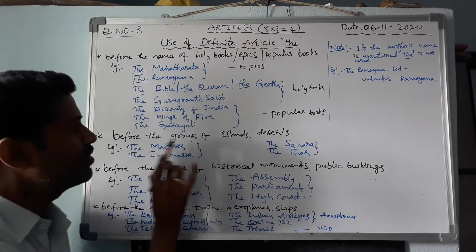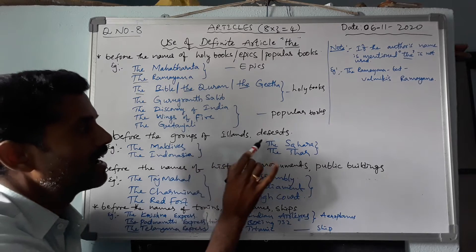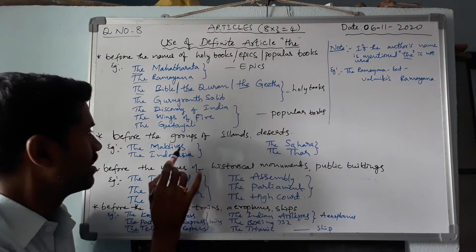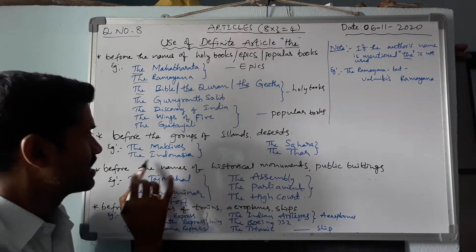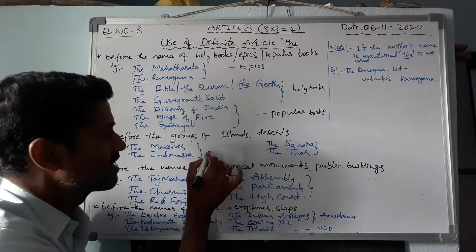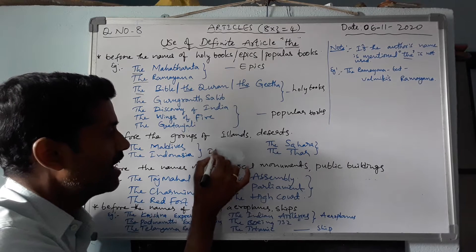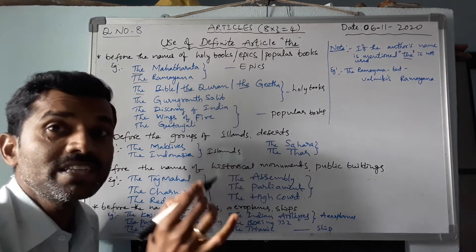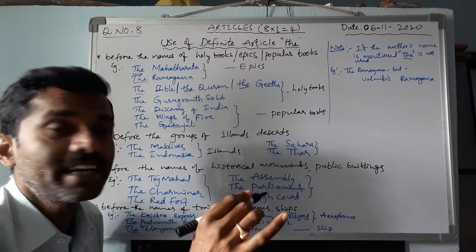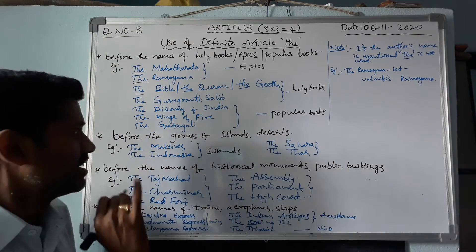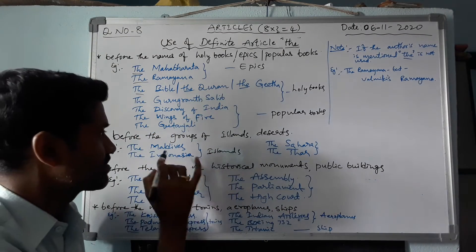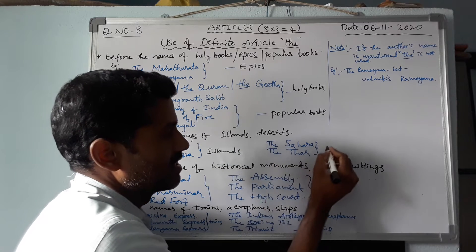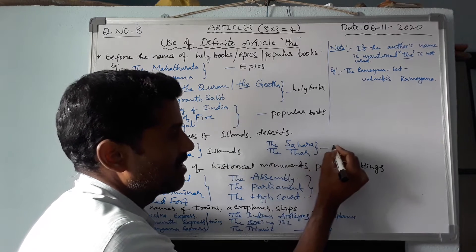Next, before the names of groups of islands and deserts, we use the definite article 'the'. For example, the Maldives and Indonesia — these are called islands. The Sahara is an example of a desert.